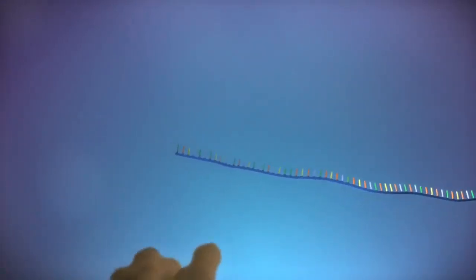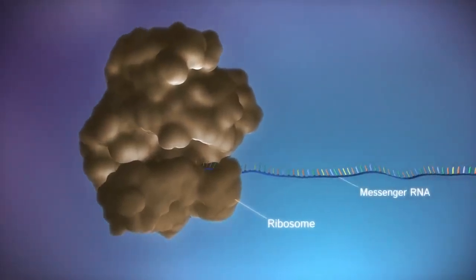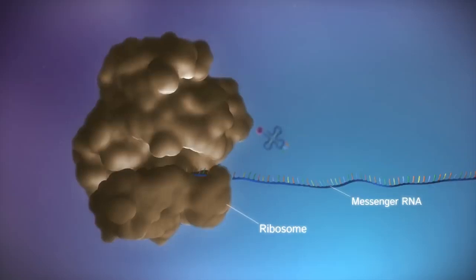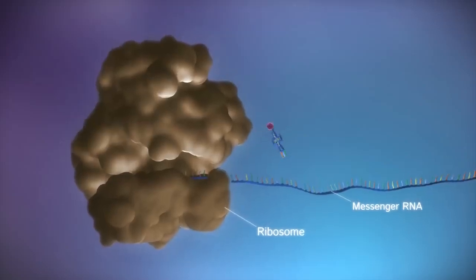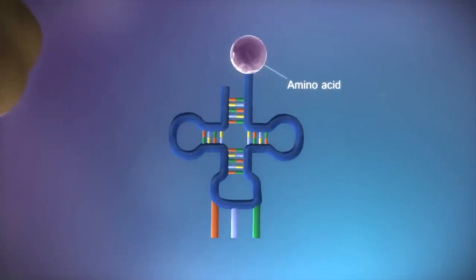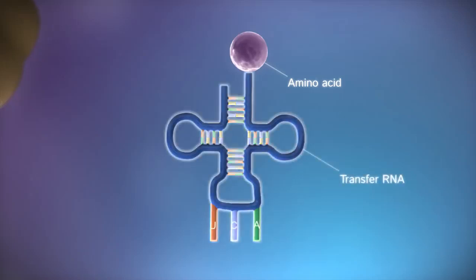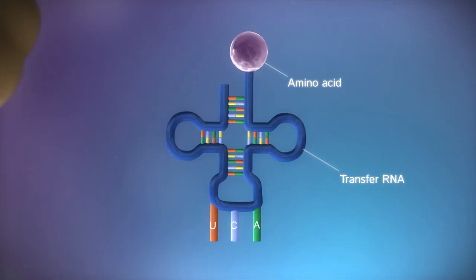Protein factories in the cytoplasm, called ribosomes, bind to the messenger RNA. The ribosome reads the code in the messenger RNA to produce a chain made up of amino acids. There are 20 different types of amino acid. Transfer RNA molecules carry the amino acids to the ribosome.